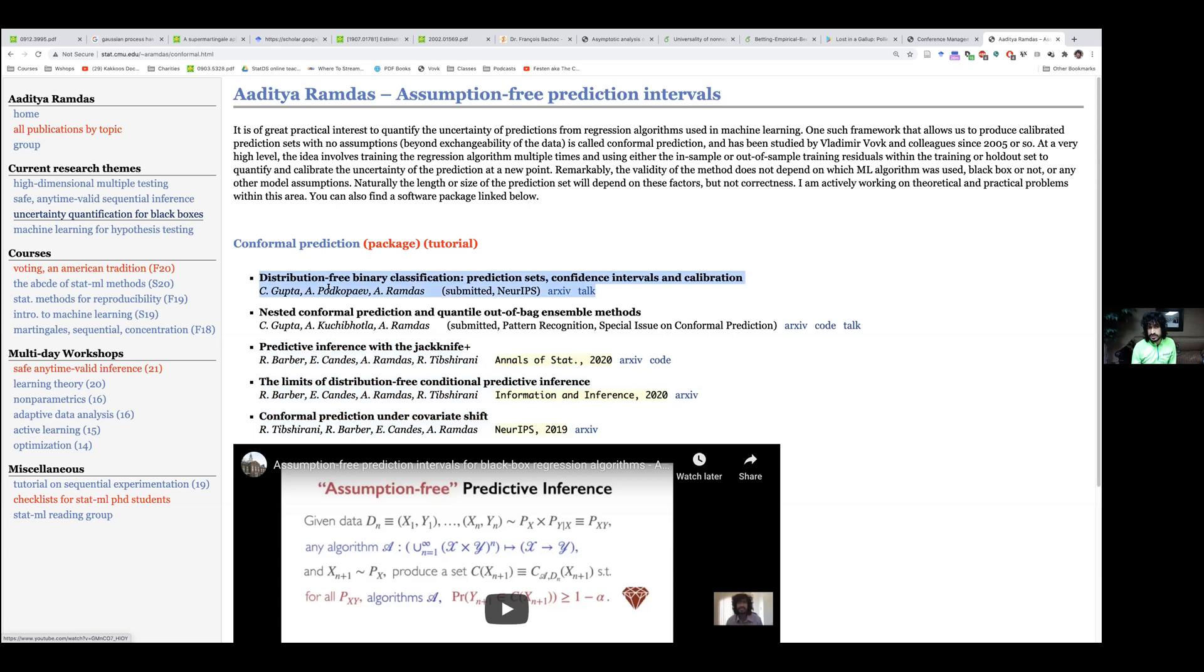And more recently, we have started to ask questions about classification as well. And there's multiple different notions of how do you quantify uncertainty for classification? I think they're interesting. So we have this, I call this the tripod paper. It connects these three notions, prediction sets, confidence intervals, and calibration for classification. Each of them is a slightly different way of quantifying uncertainty, with a different interpretation.